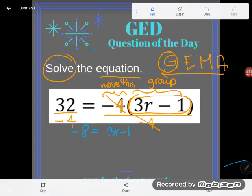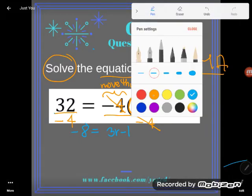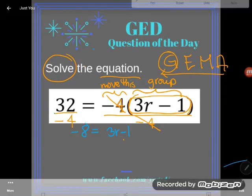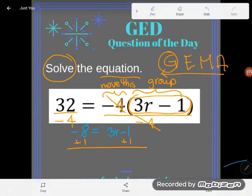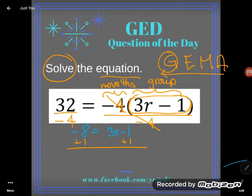OK, now I'm going to continue to work to get r alone. Next thing I'm going to move away. Since I freed up this group now, I can move away whatever's adding or subtracting. So I'm going to do the opposite of subtracting 1. I'm going to add 1 to both sides. Let's see what my new equation will be.